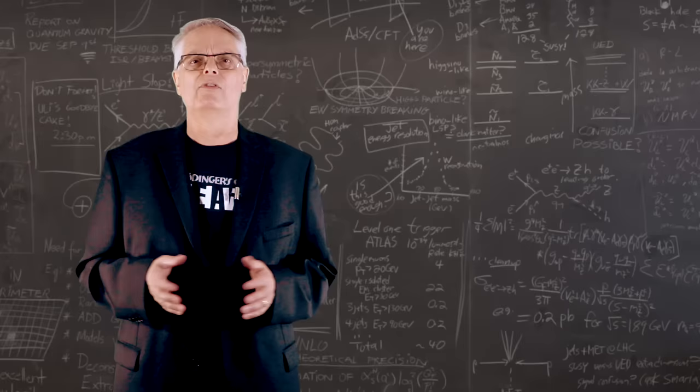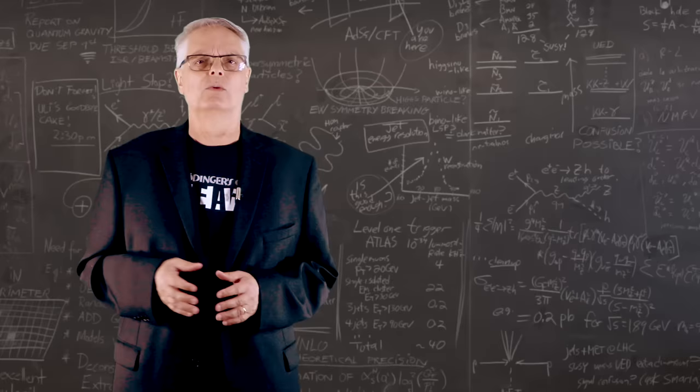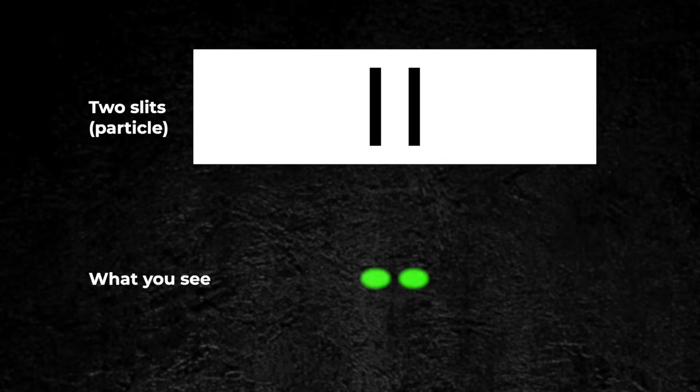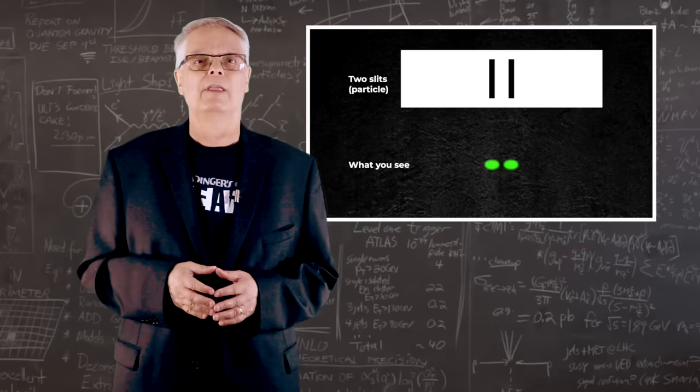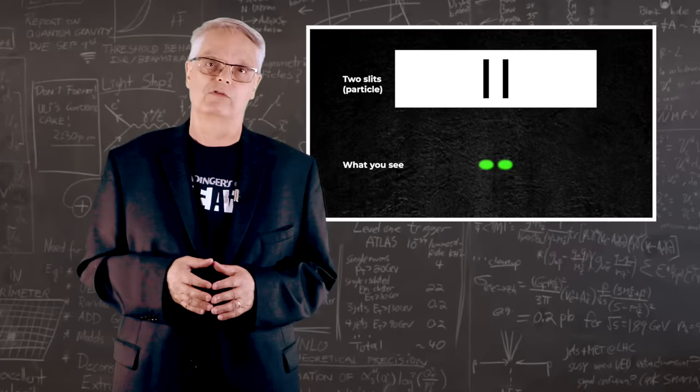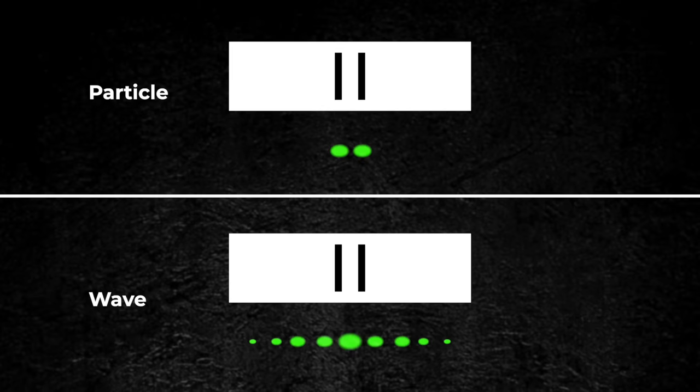So what would we expect if light acted like a particle when it went through the double slits? Well, a particle is like a BB or a marble or something. The particle would go through one slit or the other, but not both. The resulting pattern on a distant screen would be two patches where the particles hit and the rest of the screen would have no hits. But the actual double slit behavior doesn't look like that.